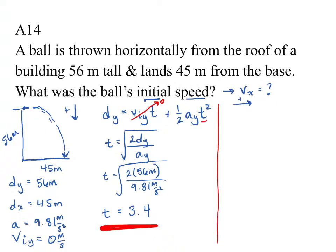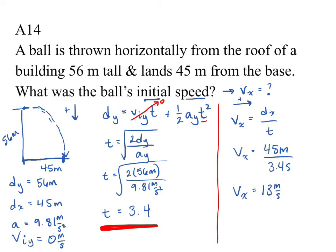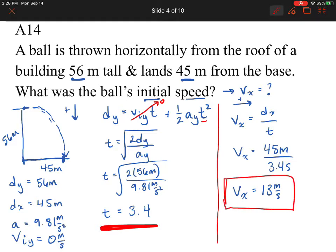In the X direction, velocity equals D over T — that's the only equation we can use, since there's no acceleration. My distance was 45 meters in the X direction — that's how much it moved horizontally. Dividing by the time of 3.4 seconds gives us a velocity in the X direction of 13 meters per second to two significant digits, which matches what we're given in the question. That is our velocity in the X direction, which is the same as our initial velocity. You have to analyze this in two different directions: Y and X separately.